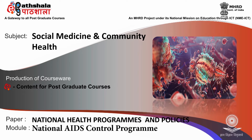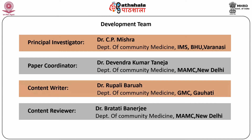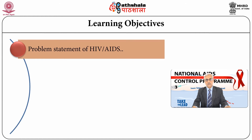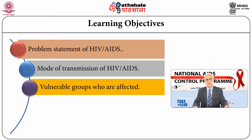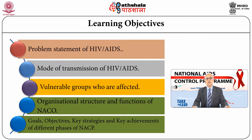This module belongs to the paper National Health Programs and Policy. This module has been developed by a team comprising of myself, Dr. B.K. Saneja, Dr. Rupali Barua, and Dr. Satham Bhanerji from New Delhi. The learning objectives for this session are: to state the problem of HIV and AIDS, to pinpoint modes of transmission, to identify vulnerable groups, to understand the organizational structure and functioning of National AIDS Control Program, and to identify the goals, objectives, and key achievements of the various stages of the program.